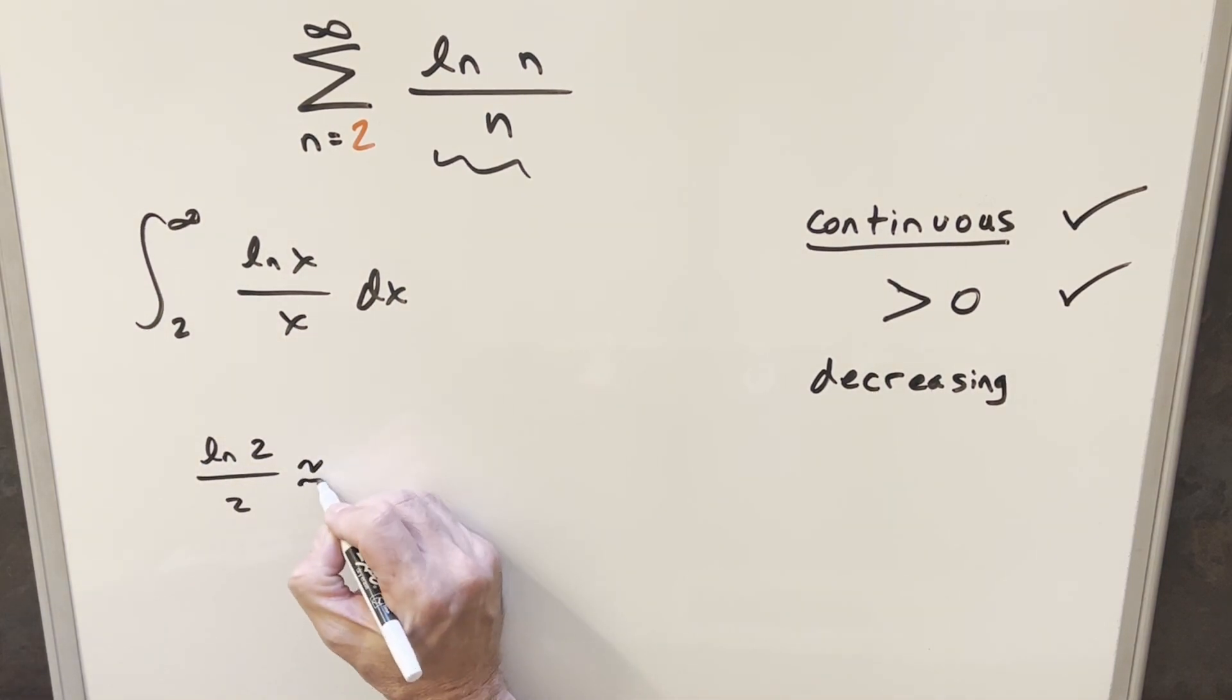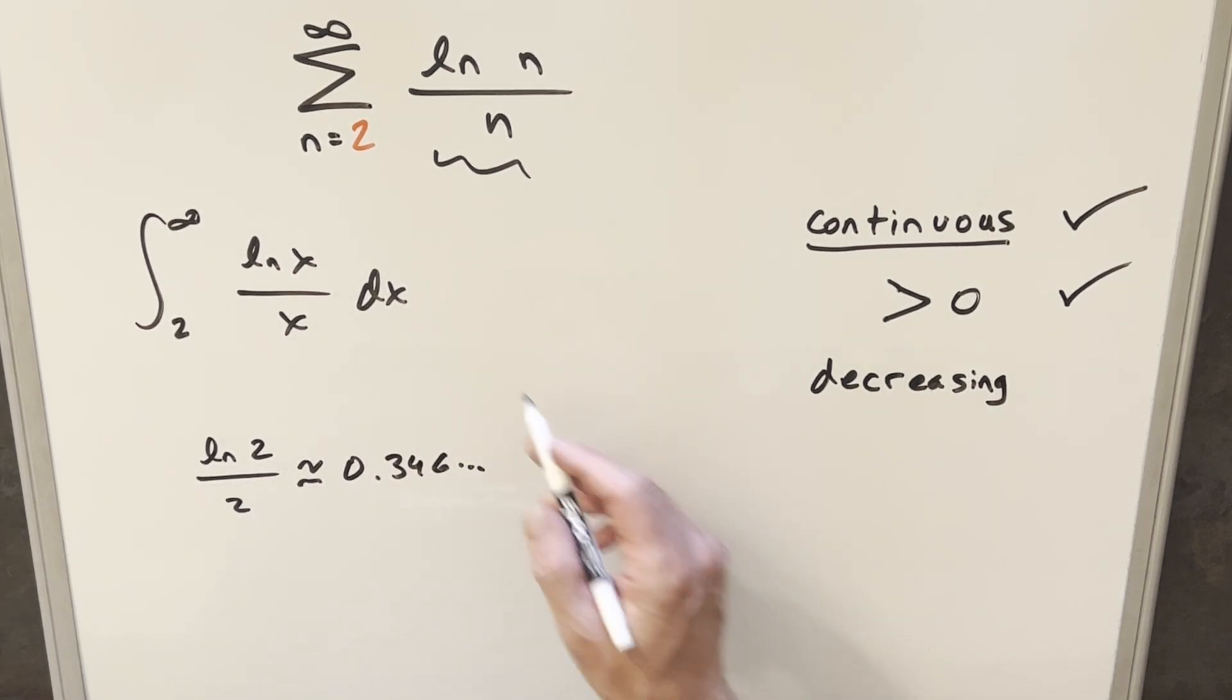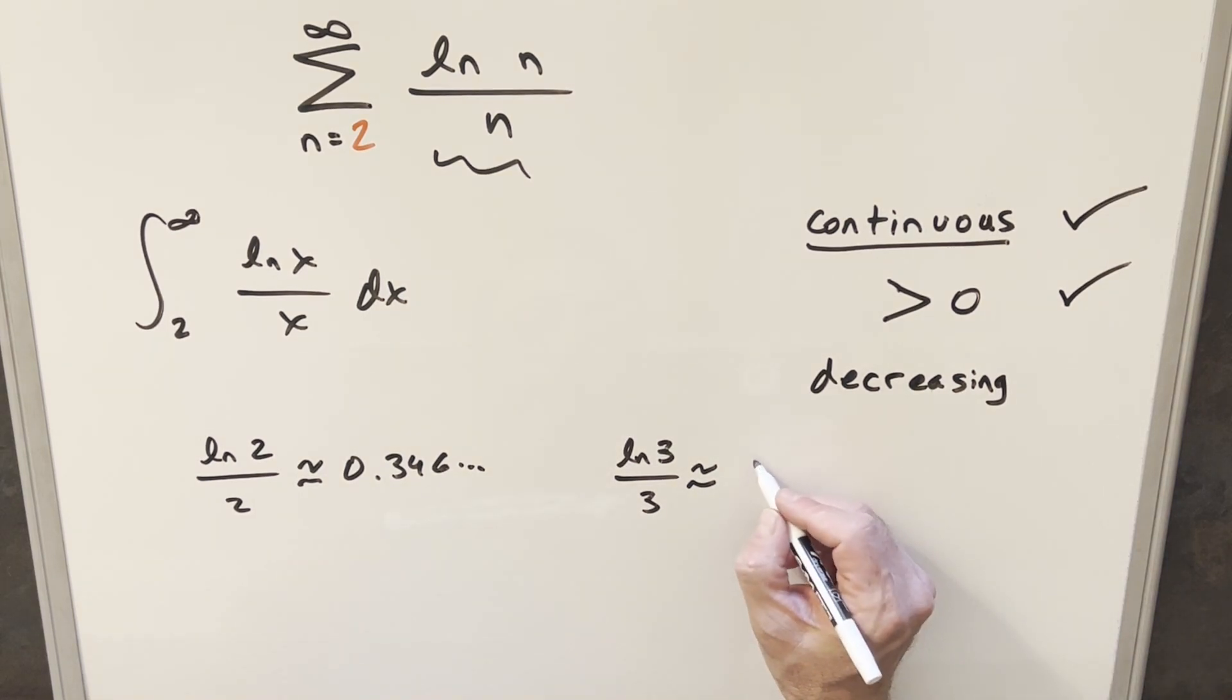this value is something like 0.346. I did it with a calculator before I did the video. And then when n is going to be 3, what happens when n is 3? We have ln 3 over 3. And this value is going to be something like 0.366.